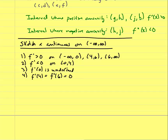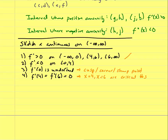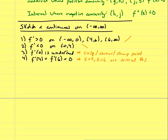f prime of 4 and f prime of 6 equal zero means critical numbers occur at those places — so I may have a max or min there. f prime of 0 being undefined, while the function is continuous, implies a cusp or a sharp point at x = 0. f prime greater than zero means a positive-sloping tangent line; f prime less than zero means a negative-sloping tangent line. There is more than one valid sketch.